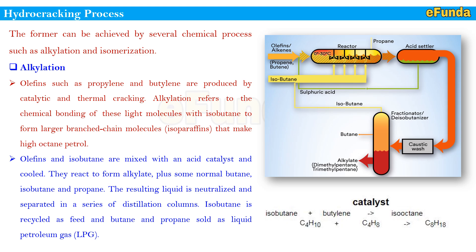The separated products of alkylation include dimethylpentane and trimethylpentane (alkylate), and isobutane is taken out separately and recycled back. This completes the alkylation process.